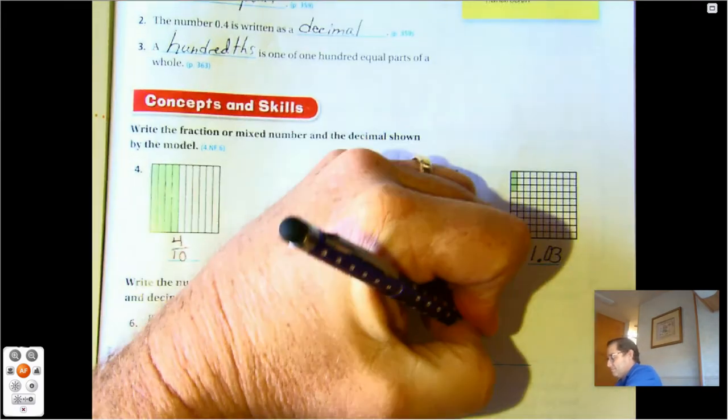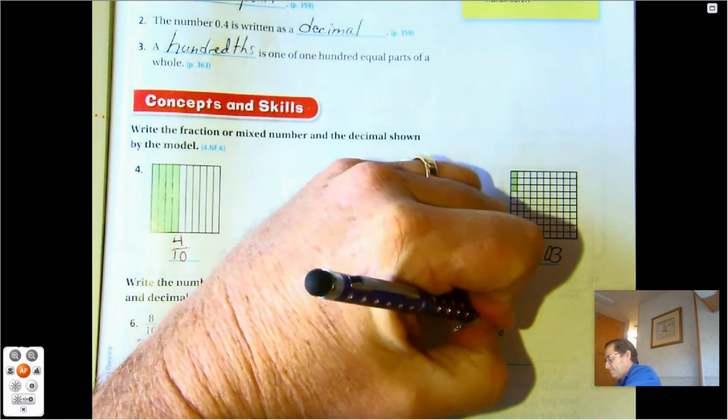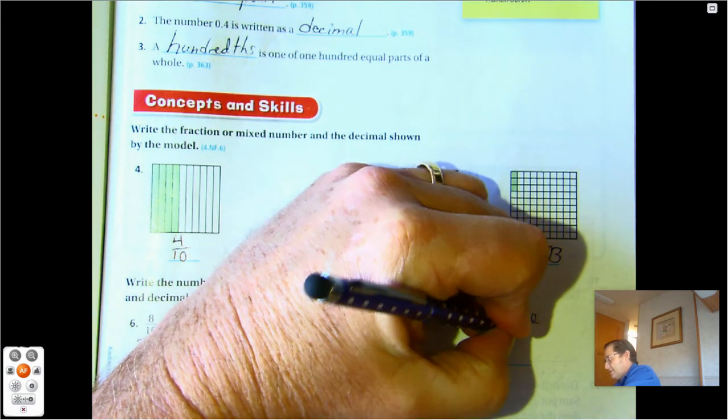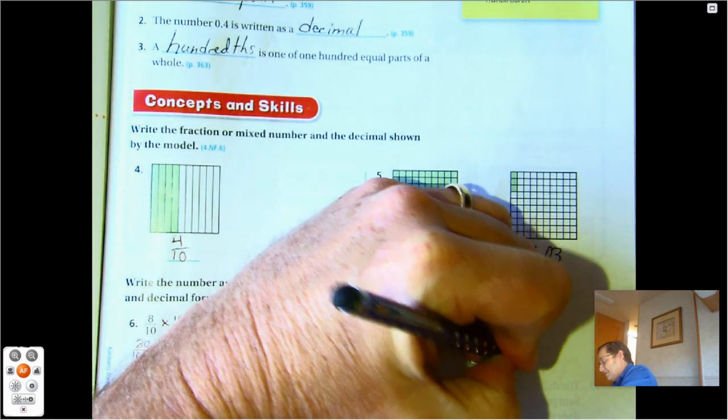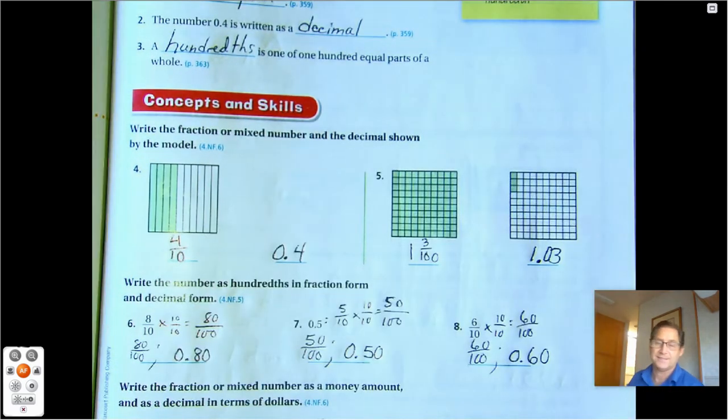Six tenths, multiply by ten over ten, we get sixty hundredths. That value written as a decimal is 0.60.